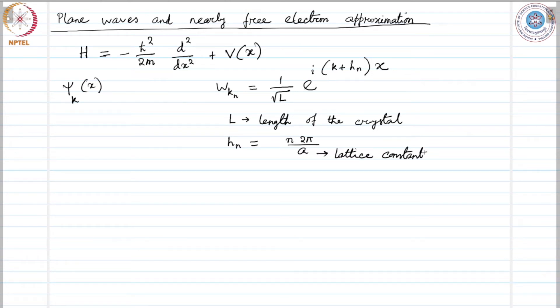Now, if we want to find out the Hamiltonian matrix element between the basis functions, then we can write w k m the Hamiltonian followed by the ket state w k n.